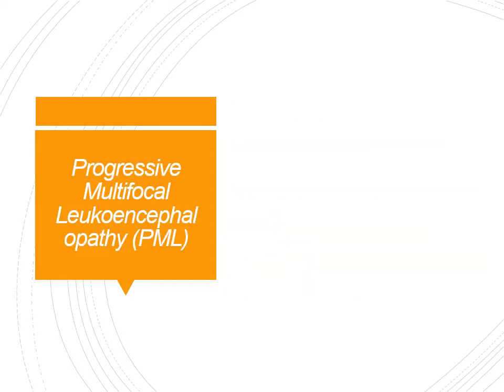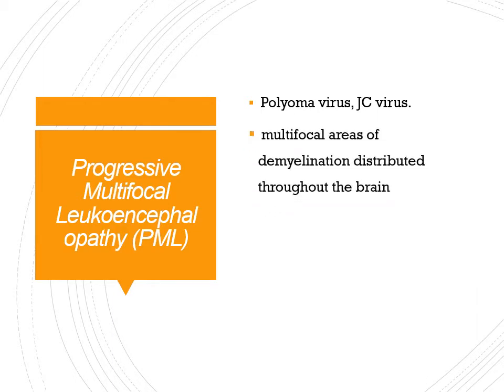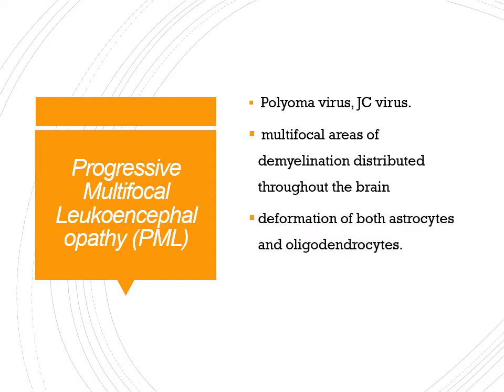Progressive multifocal leukoencephalopathy is caused by the polyoma virus, specifically the JC virus. What is seen in this infection is multifocal — there are multiple areas of demyelination throughout the brain. Demyelination means the removal of the myelin sheath, which is the protective covering of neurons. There is also deformation of both astrocytes and oligodendrocytes.